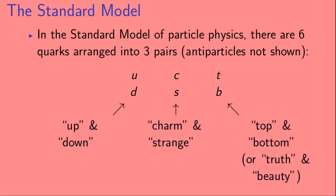In the Standard Model of Particle Physics, there are six quarks arranged into three pairs — and here we're only showing the particles, not the anti-particles. We have the up and down quarks, the charm and strange quarks, and the top and bottom quarks, occasionally referred to as the truth and beauty quarks. In this video, we're going to be looking at the B quark, also known as the bottom quark.